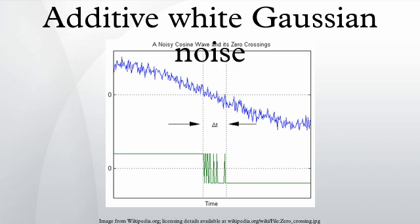Additive white Gaussian noise is a basic noise model used in information theory to mimic the effect of many random processes that occur in nature.